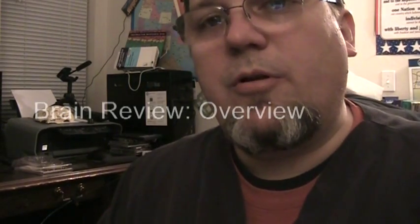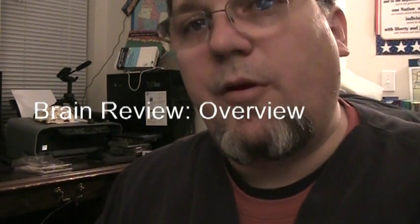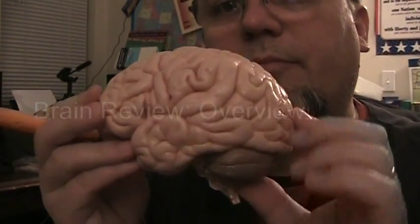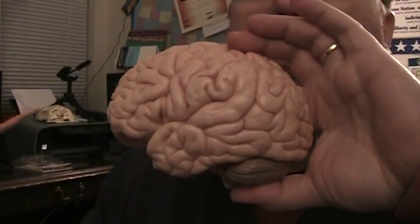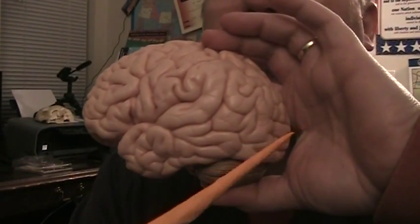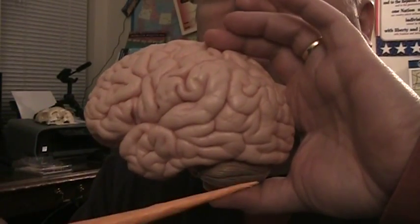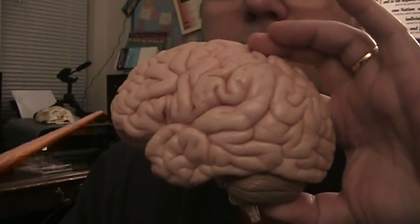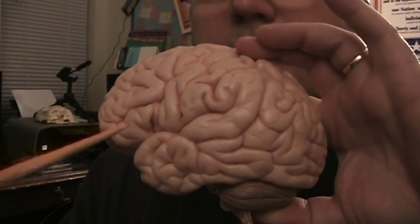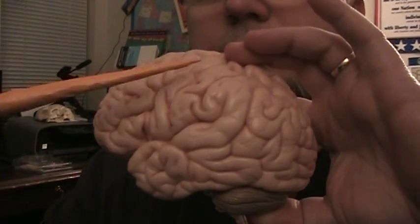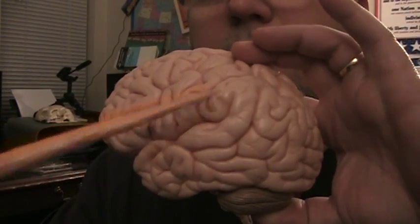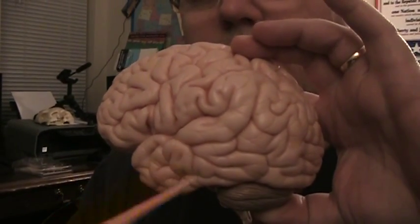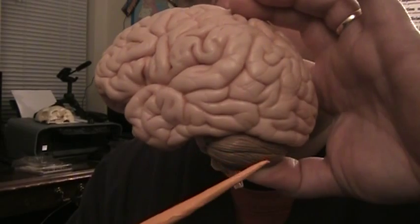We're going to do a quick overview of the brain. As we can see, anterior, posterior, superior, inferior. This is our frontal lobe, parietal lobe, occipital lobe, temporal lobe. We can see here the cerebellum.